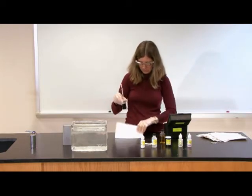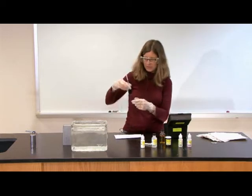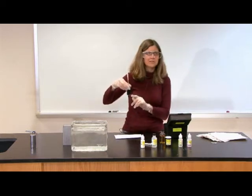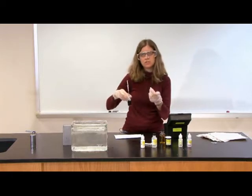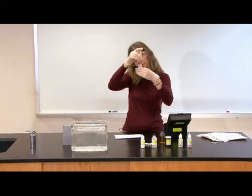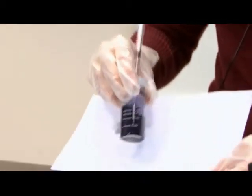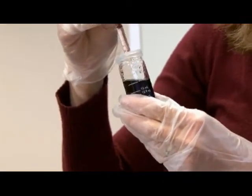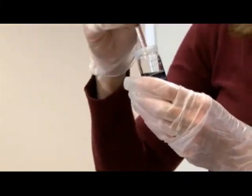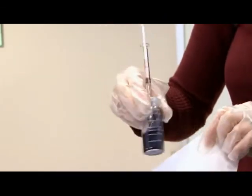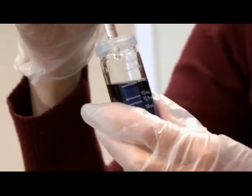What I want to do is I want to titrate my sample one drop at a time, swirling after each addition until the blue color disappears and I have a clear solution. Again, the color change happens very rapidly. So it's important after each drop to swirl and also to compare against a white paper. It looks like it's getting a little lighter, but it's certainly not clear yet.